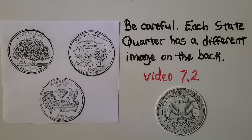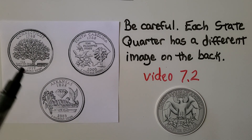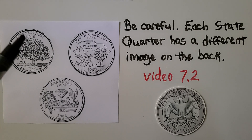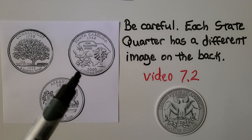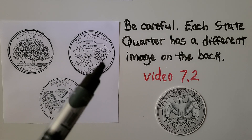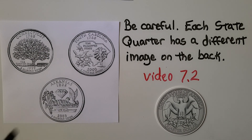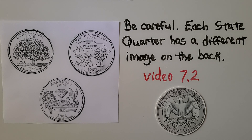Be careful when counting coins because, as we learned in video 7.2, there are state quarters that were made for a while. Each state quarter has a different image on the back — a regular quarter has the bald eagle, but each state quarter has information about the state, like the year it became a state. For example, Arkansas shows corn and diamonds, and South Carolina shows it's the palmetto state. All those quarters have different backs without the eagle, but they all have George Washington on the front and are still worth 25 cents.